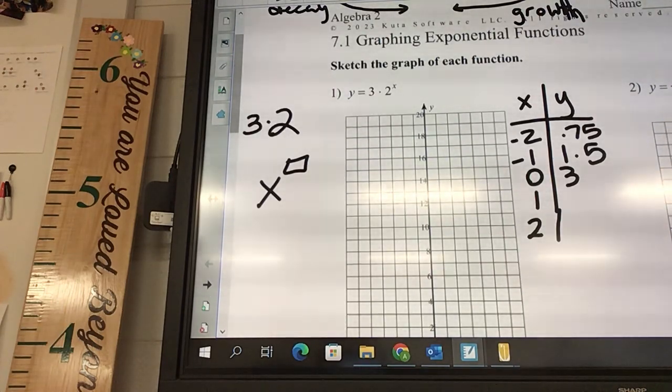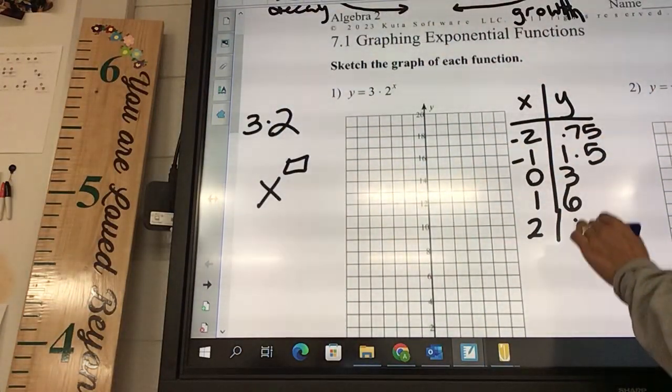What did you get? What did you get for the 1? 6. And the 2? 12. So this is not enough points, but it's enough, and then using our brain to know what the picture is going to look like.